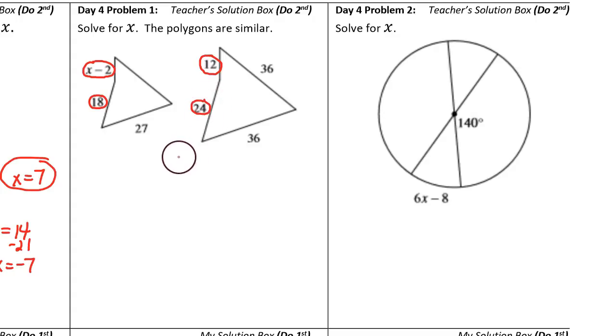Let's create a proportion with those values. x minus 2 corresponds to the 12, as the 18 corresponds to the 24.